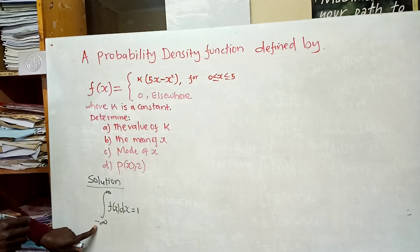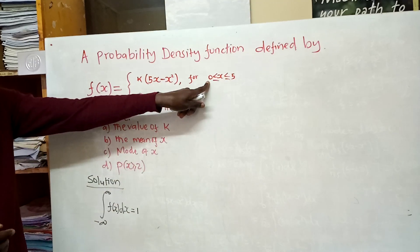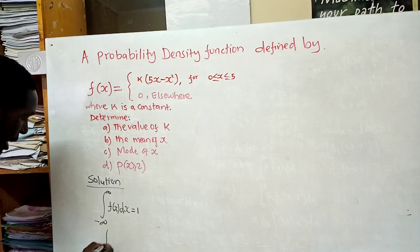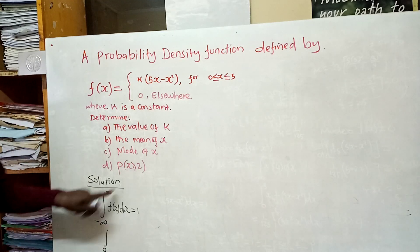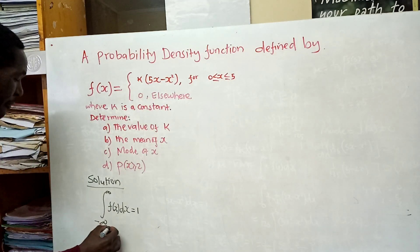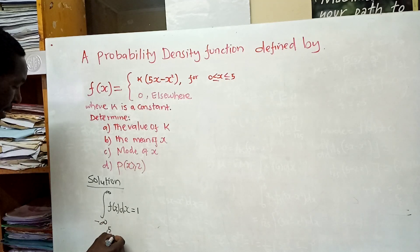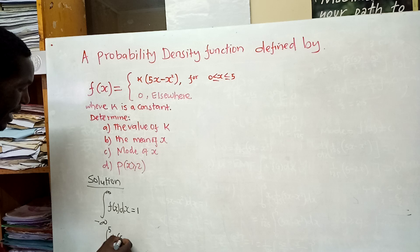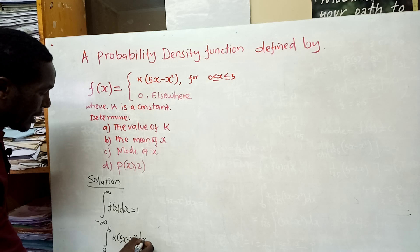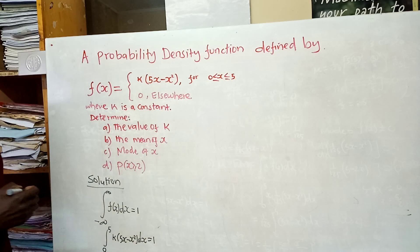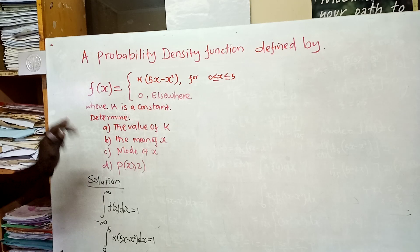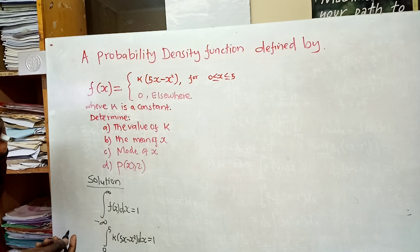The lower limit is negative infinity, and in our case the lower limit is 0, so negative infinity is equal to 0 here. The upper limit is 5, since that is the largest value for x where the function exists. So we integrate k(5x - x²) with respect to x from 0 to 5 and equate it to 1.